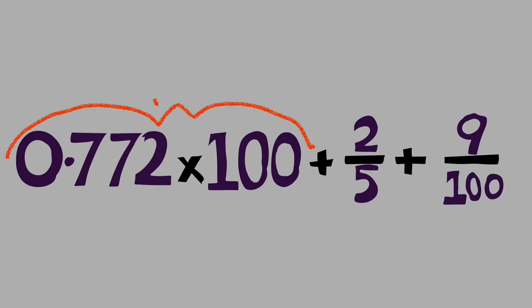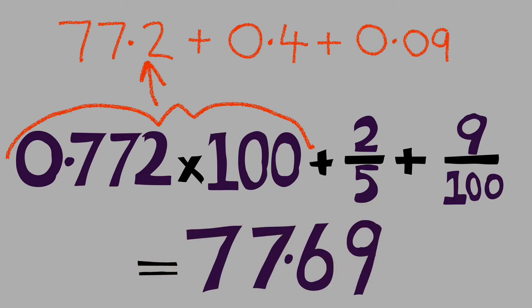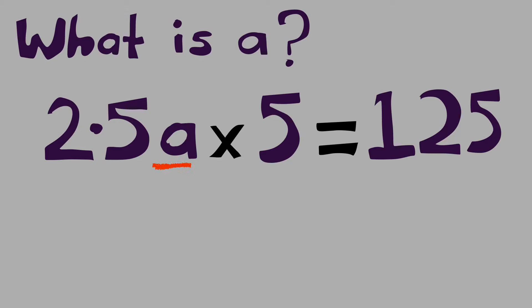Here we need to move that decimal point because we're multiplying 0.772 by 100, so move it two places to the right and we've got 77.2. Then we're going to add 0.4 because that's the same as two-fifths, then 9 over 100 in decimal form is 0.09. We're going to add all those together to get our answer.